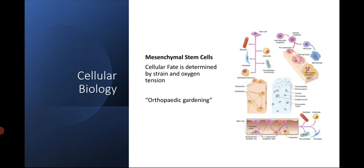Mesenchymal stem cells become cartilage under conditions of intermediate strain and low oxygen tension, and they become fibrous tissue under conditions of high strain. That's why I included the term 'orthopedic gardening' — when we try to fix a fracture, we increase oxygen tension by not violating the periosteum of the bone or the soft tissue covering, and we decrease strain by fixing the bone and perfecting end-to-end contact between the bones.